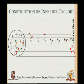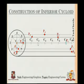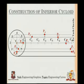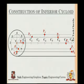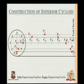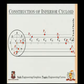Then taking C2, I cut an arc at P2. For C3, I cut an arc at P3. For point 4, the circle has completed half the revolution, so the arc comes parallel to the directing line, giving a perpendicular point P4. Similarly, I obtain P5, P6, P7, and P8.